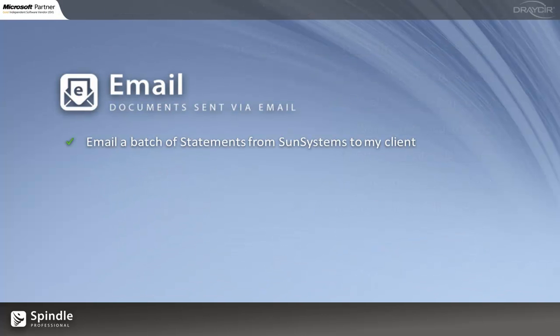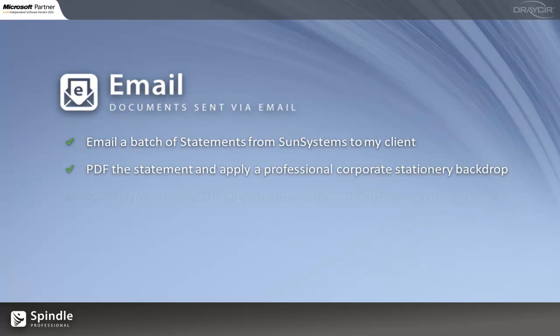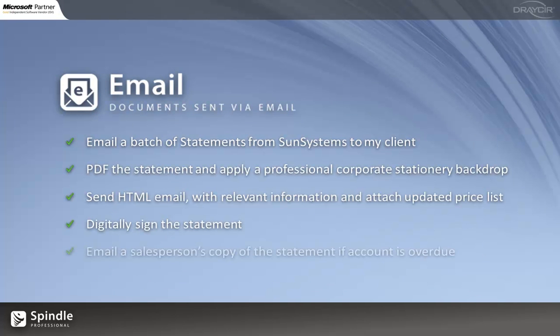The first part of this demonstration will be the emailing side of things. We're going to print a batch of statements to Spindle. Spindle will then take that document, add logos and other branding, and then turn it into a PDF. It will then apply a digital signature and wrap the whole thing with a nice professional email which contains relevant information pulled from Sun. Lastly, if the account's overdue, we're going to send the salesperson a copy.